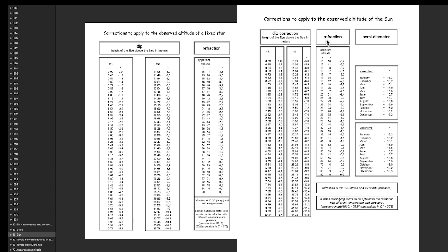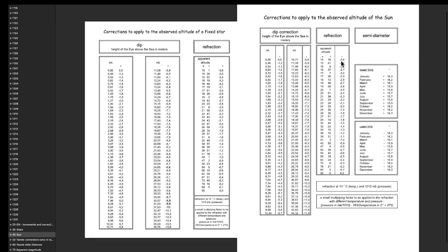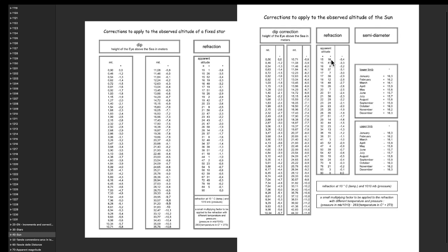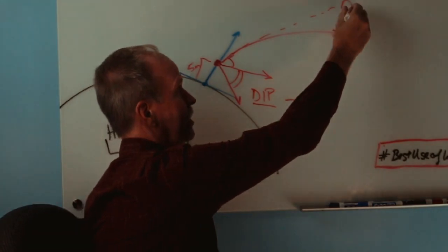But right here is our refraction table. And our refraction table has to do with what our measured altitude on the sextant is. So between 15 degrees 16 minutes and 15 degrees 41 minutes, we're going to have to subtract 3.4 or 3.3 minutes of angle depending on where our reading is, whether it's closer to 15 degrees 16 minutes or 15 degrees 41. And that takes into account this error right here.